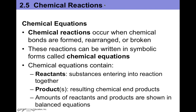In this video we're going to talk about chemical reactions. Chemical reactions occur when a chemical bond is either formed, broken, or rearranged. These reactions can be written in chemical equations. These equations have reactants and products. The reactants are those chemicals that react together to make your product, which are the resulting chemical end products.